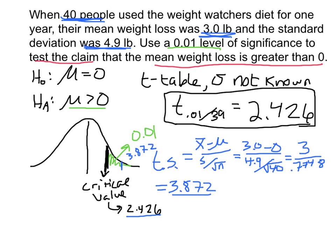The green region is the rejection region — reject the null. Since our test statistic lies in the rejection region, there is evidence to reject the null hypothesis in favor of the alternative hypothesis. In other words, there is evidence to support the claim that the mean weight loss is greater than zero. We won't say it's always true, but there's evidence to reject the null in favor of the alternative.